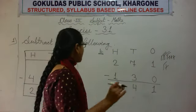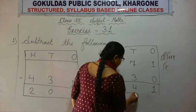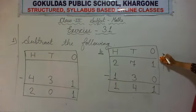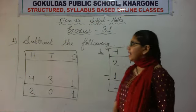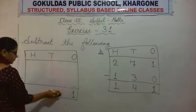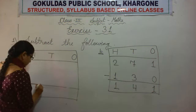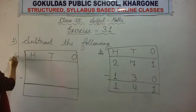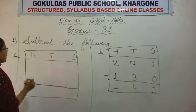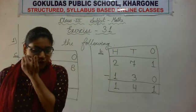Once again, we will make proper lines with the help of a scale or ruler in the copy. The drawing of sticks is our rough work, so we will not show it in the fair copy. Part C is 698 minus 473.